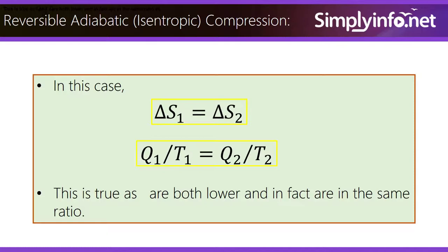Reversible Adiabatic Isentropic Compression: In this case, delta S1 equals delta S2, Q1 by T1 equals Q2 by T2. This is true as both are lower and in fact are in the same ratio.